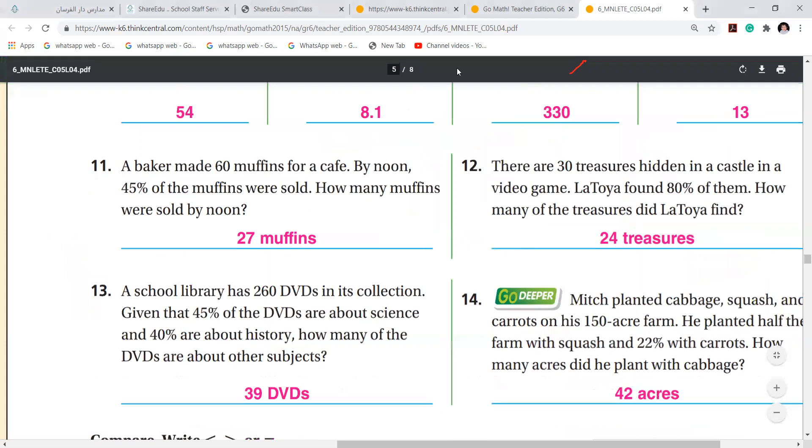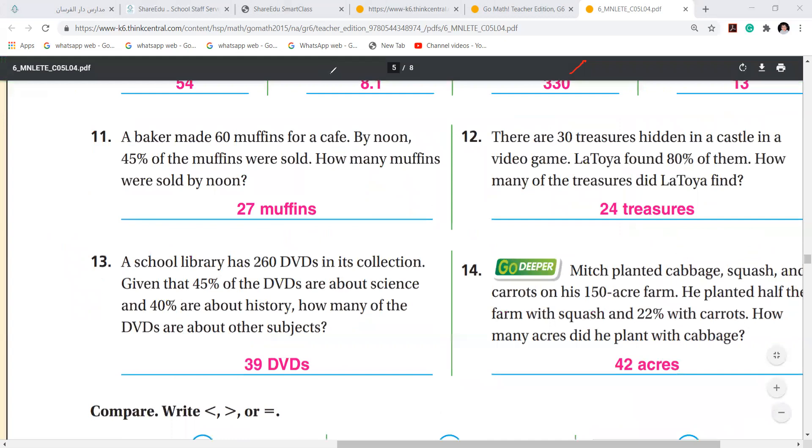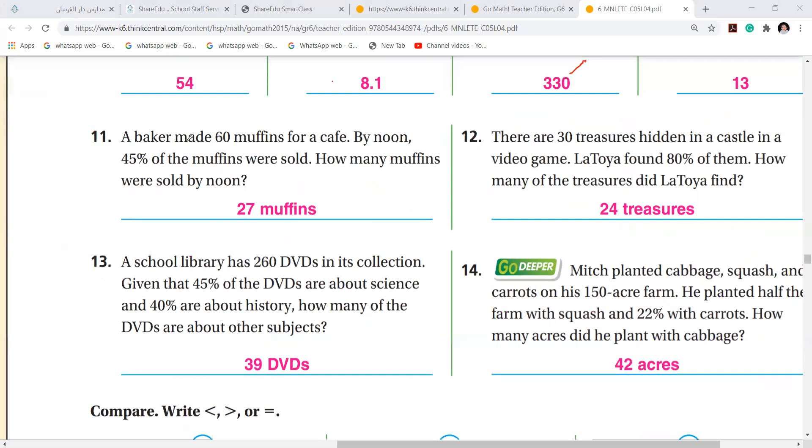Okay, let us quickly do this now. A baker, girls these questions be very careful. A baker made 60 muffins for a cafe. How many muffins? 60. By noon, 45% of the muffins were sold. 45% of how many muffins were sold? How many total he made? 60.